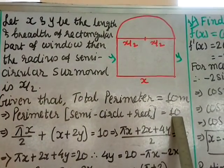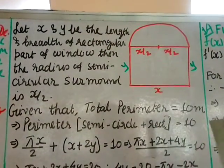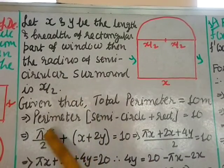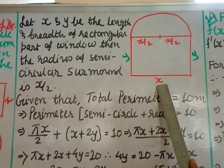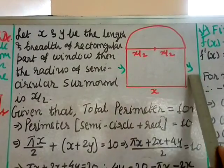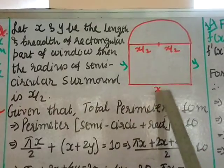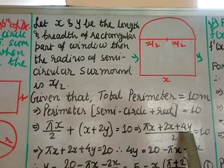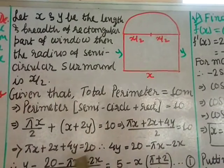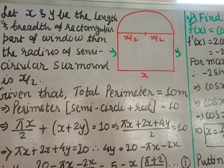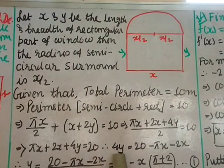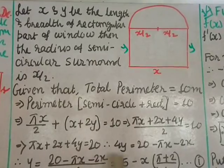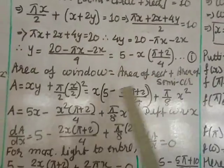The total perimeter equals the semicircle perimeter plus three sides of the rectangle: πr + x + 2y = 10. Since r = x/2, this becomes πx/2 + x + 2y = 10. Multiplying through by 2: πx + 2x + 4y = 20. Solving for y: y = 5 − x(π + 2)/4. This is equation 1.